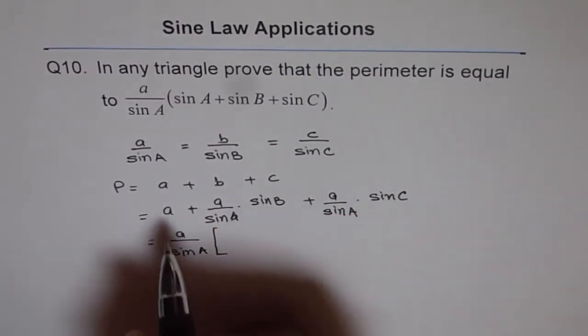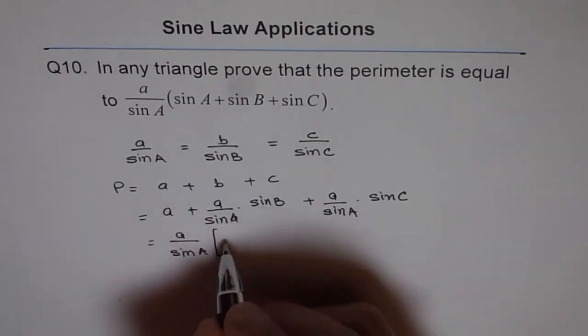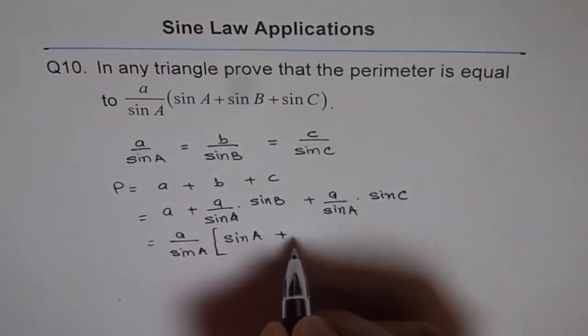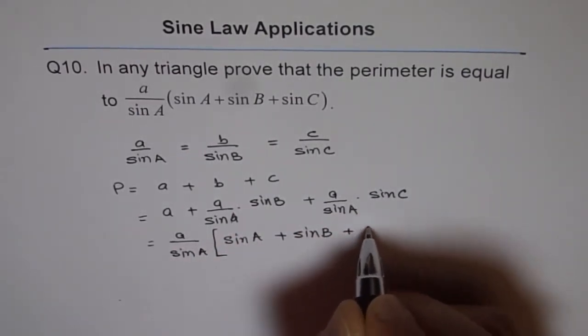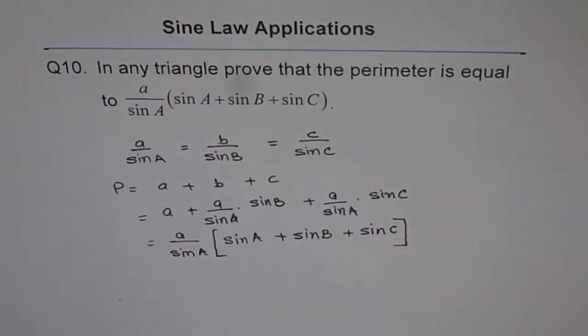then what do we get? Here we have only a, so we need to multiply by sine A. We get sine A here, plus sine B, plus sine C. It is a very interesting example which gives you perimeter of a triangle in sine A, B, C form.